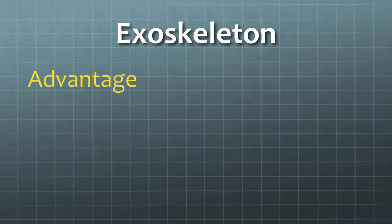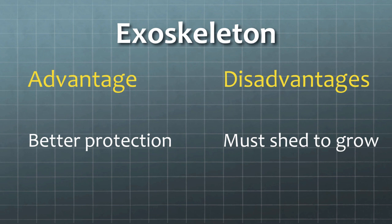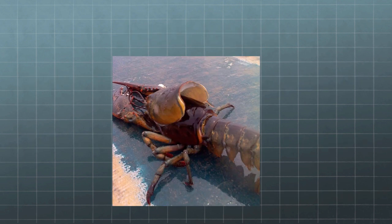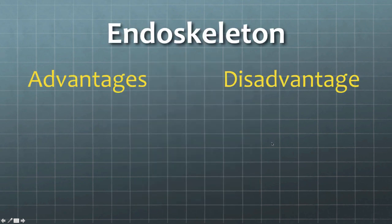Back to exoskeletons — the advantages include better protection. The disadvantages are that you have to shed every time you grow, and they're also heavy and harder to move. Here is a lobster as an example — you can see the old skeleton being shed and a new skeleton underneath. Imagine every time you grow you had to shed something on the outside — that would be a big pain.